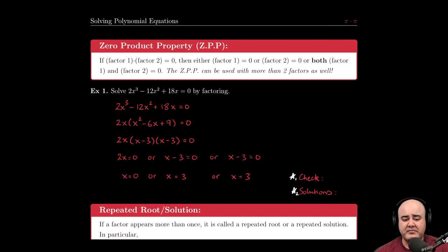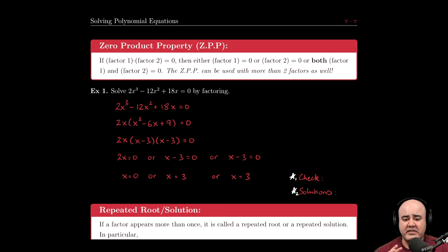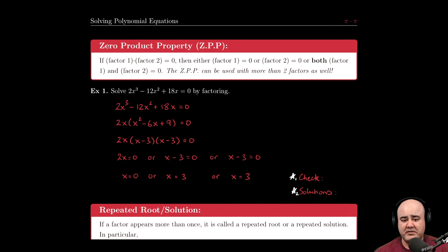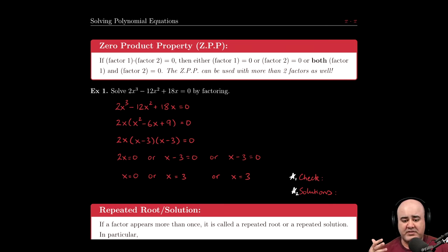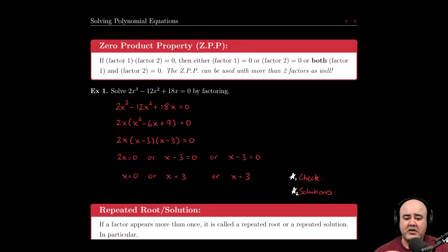This does not restrict itself to just two factors. If you have three factors, the zero product property still applies. If you're multiplying three, four, or 17 quantities and you're getting zero as the answer, one of them has to be zero. There's no choice in the matter.